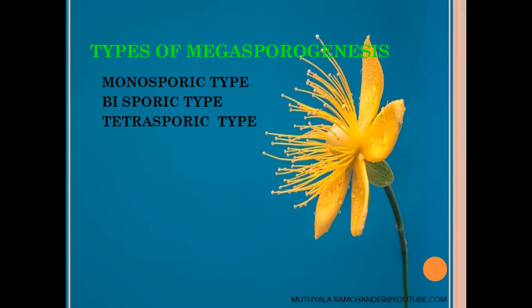The three types of Megasporogenesis are: one, monosporic type; two, bisporic type; and three, tetrasporic type of Megasporogenesis.